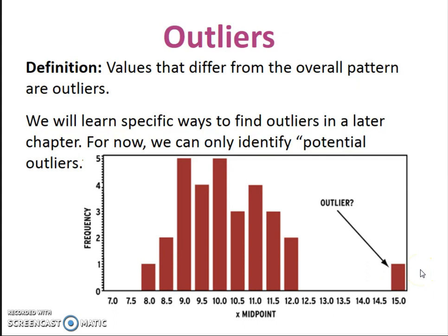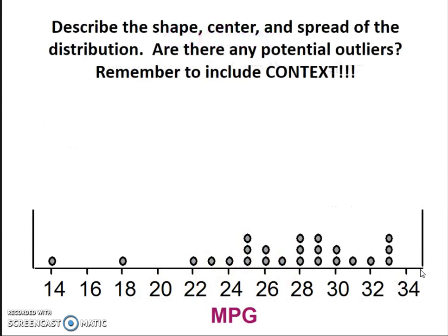To put these four attributes — shape, center, spread, and outliers — into practice, take a look at this example. We want to describe the shape, the center, and the spread, and determine if there are any potential outliers. Include any context — MPG stands for miles per gallon, so we must be talking about cars. On your notes, leave some space and go through your SOCS: talk about shape, outliers, center, and spread for this particular distribution.